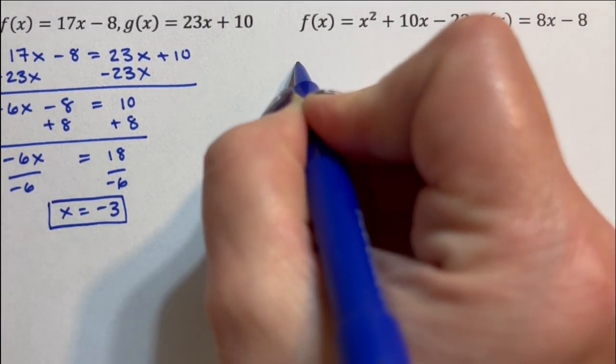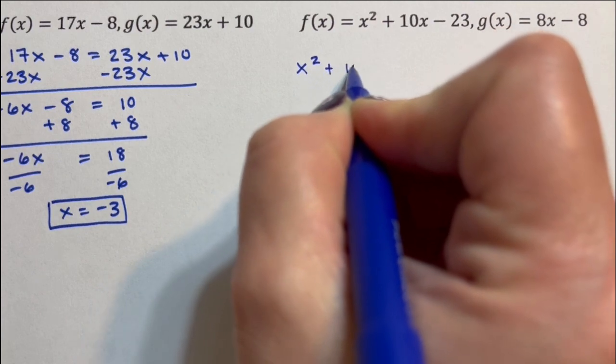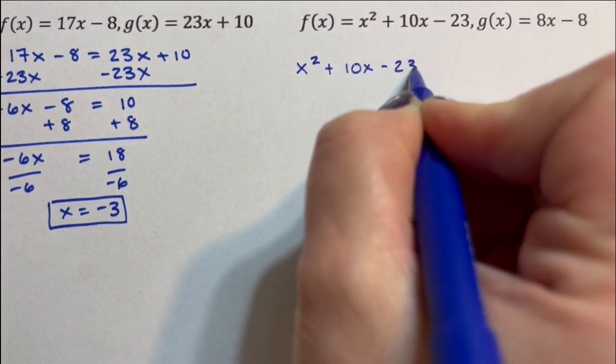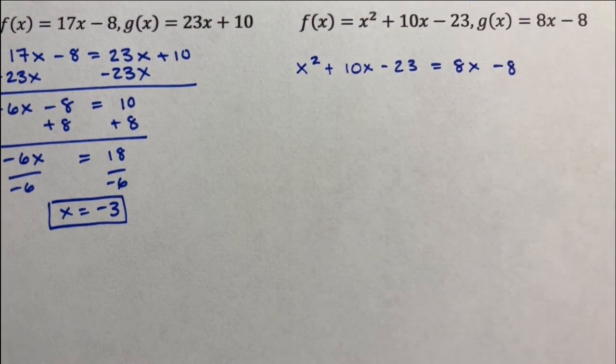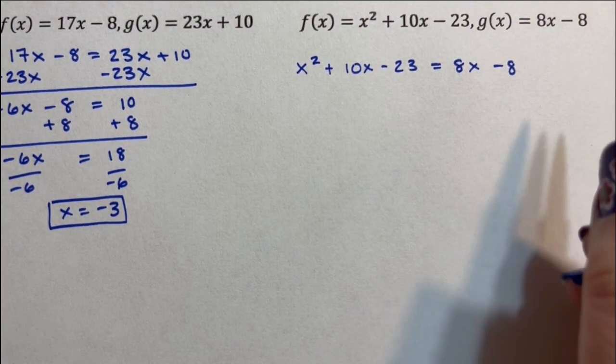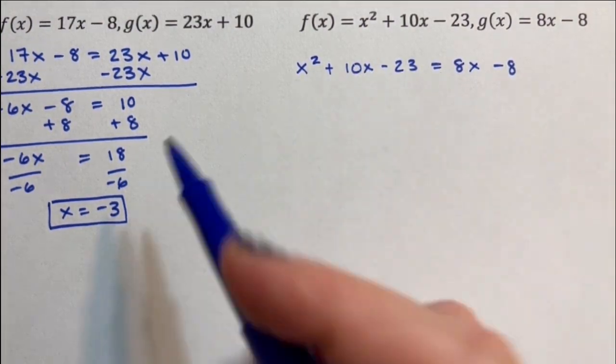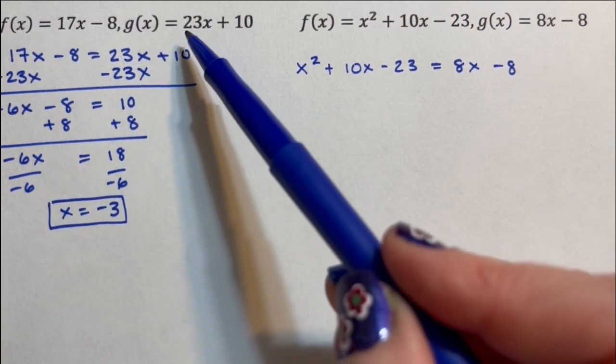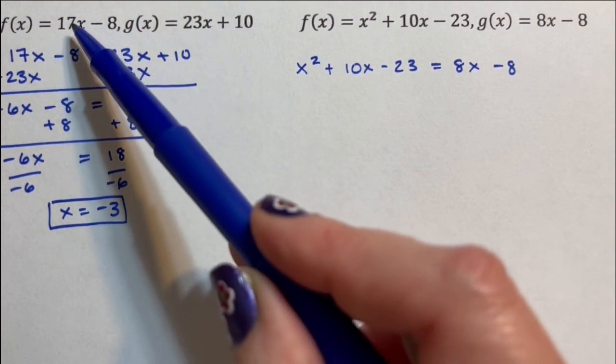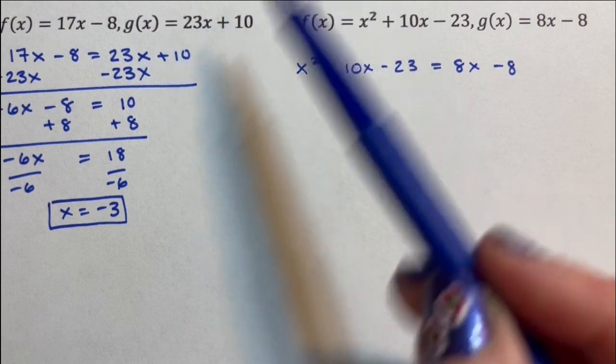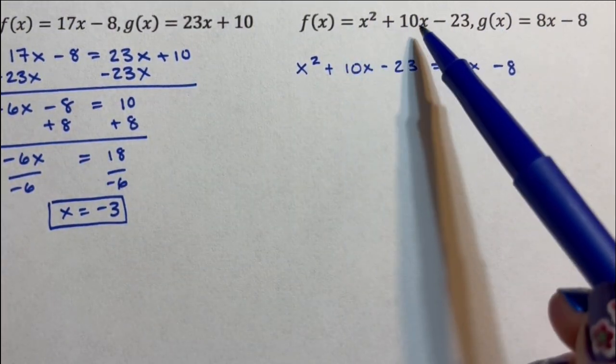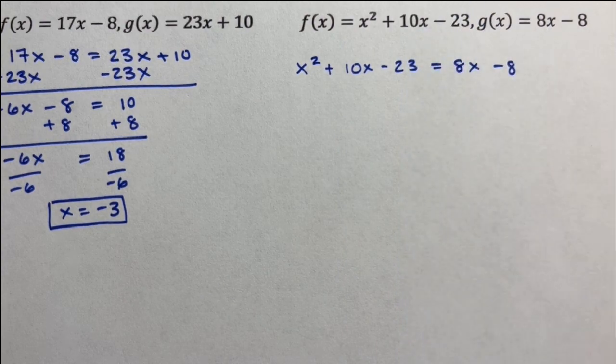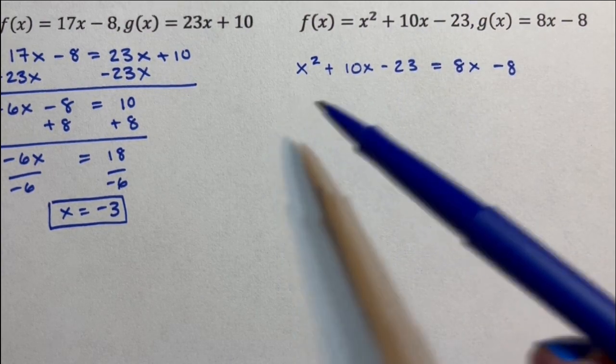So I have x squared plus 10x minus 23 equals 8x minus 8. Because in this first example, I only had a singular x, so I isolate it. I get all the x's on one side, numbers on the other, and divide. Here I have an x squared and an x, so I have to move everything to one side, factor, and solve.